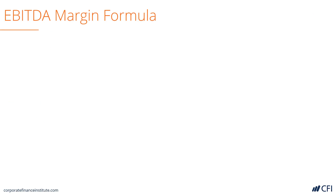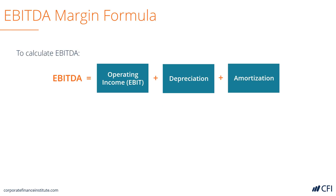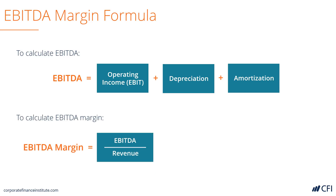Let's look at the EBITDA margin formula. Starting with EBIT, you simply add back depreciation and amortization. If you start with net income, you also add back interest and taxes. Once you have EBITDA, you take it and divide it by revenue to get a percentage.